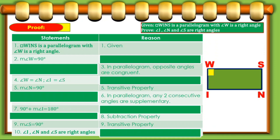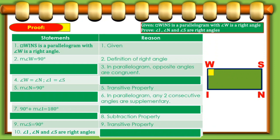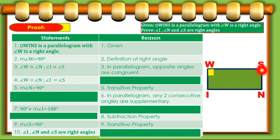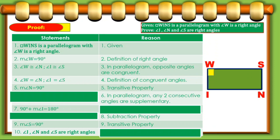Statement number two: the measure of angle W is equal to 90 degrees, and that is the definition of right angle. So what would be our next statement? The reason is that in a parallelogram, opposite angles are congruent. So you have there angle W is congruent to angle N, and angle I is congruent to angle S. From that we can conclude in statement number four that angle W equals angle N, and angle I is also equal to angle S, and that is the definition of congruent angles.